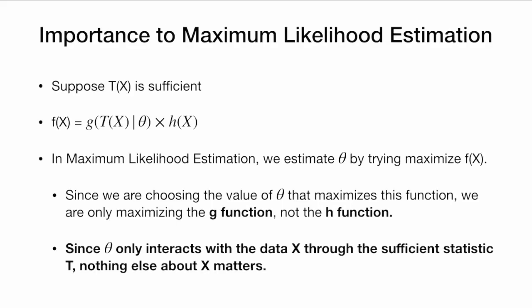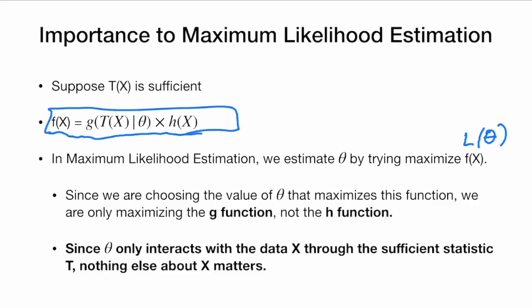Why might we care about sufficiency? Sufficiency is important in maximum likelihood estimation. Suppose a statistic is sufficient — by the factorization theorem we can write the density as a product of two parts. In maximum likelihood estimation, we estimate theta by maximizing f(x). We're choosing the value of theta that maximizes this function. If we're trying to choose the value of theta, that only involves the function g and does not involve the function h, which means theta only interacts with the data through the sufficient statistic t, and nothing else about the data will matter.